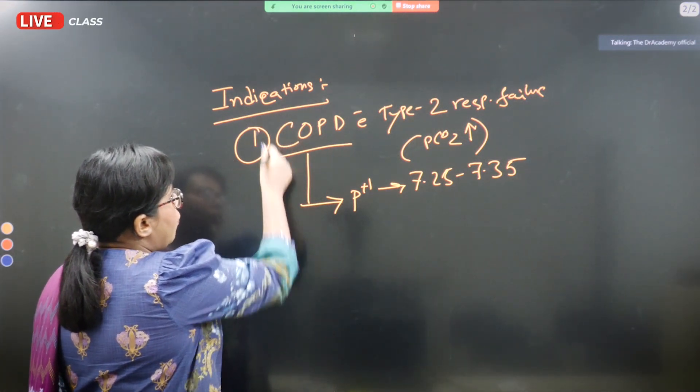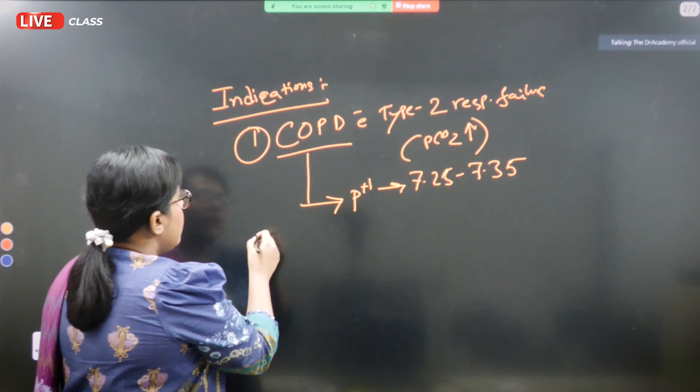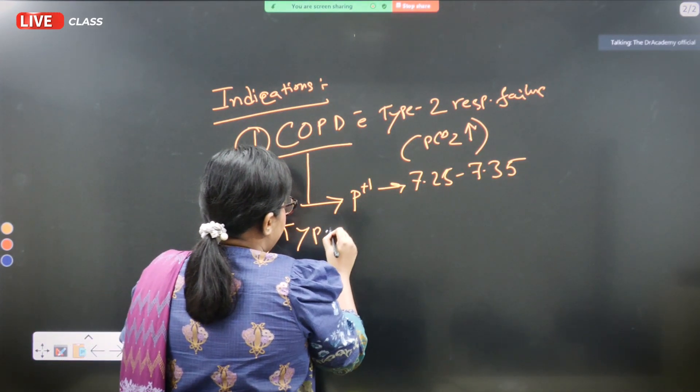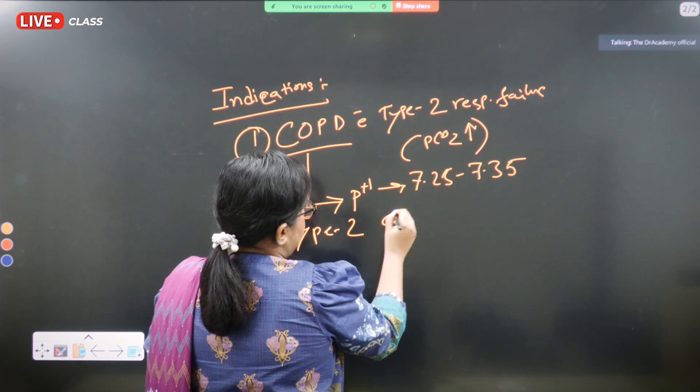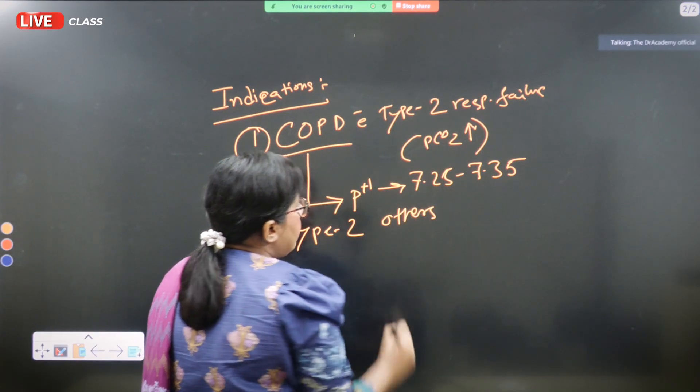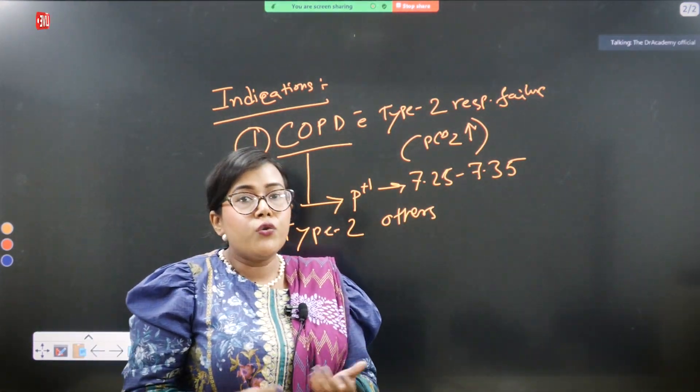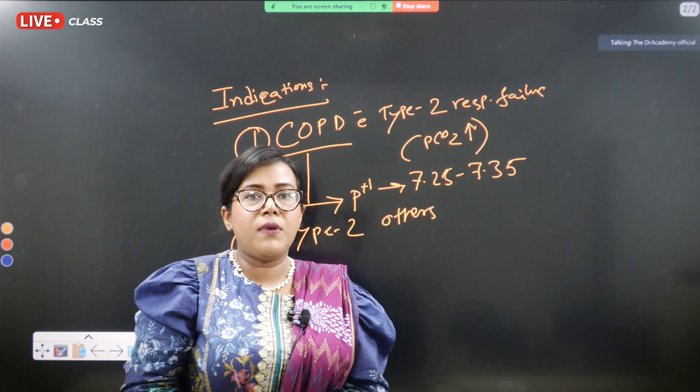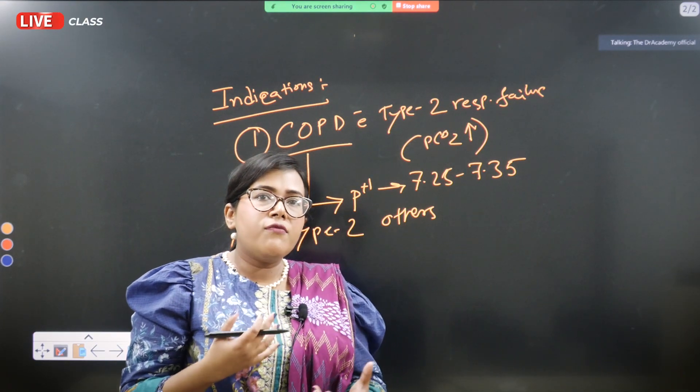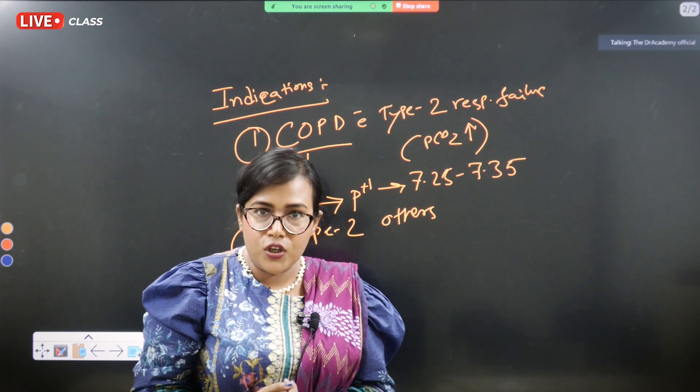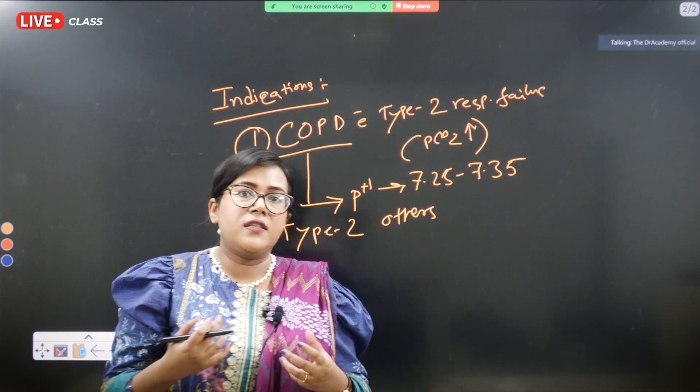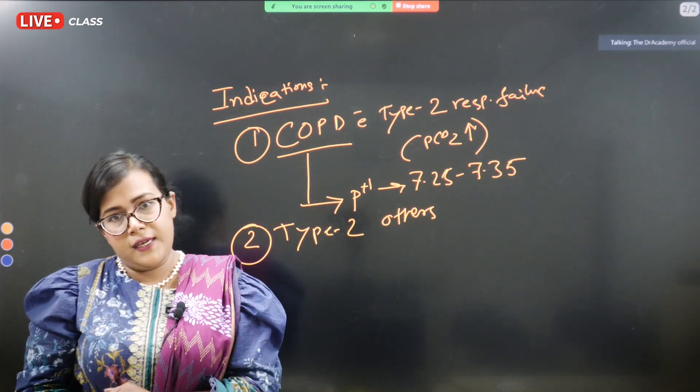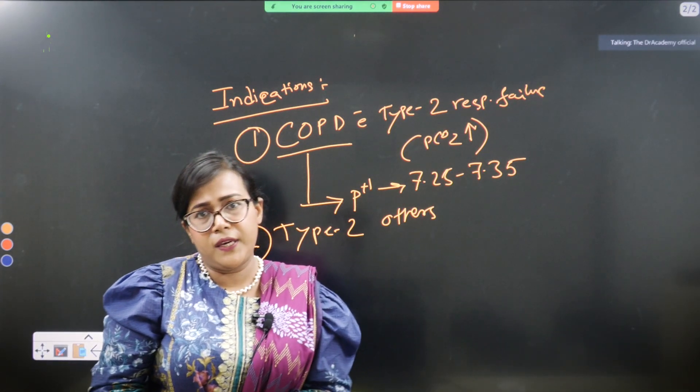Number two is type 2 respiratory failure due to other conditions. For example, it can be due to neuromuscular disease like myasthenia gravis, myogenic dystrophy, some form of neuromuscular condition which causes diaphragm paralysis thereby causing ineffective breathing.